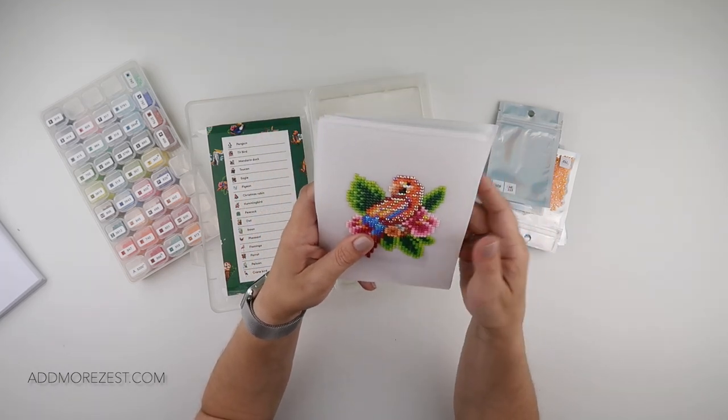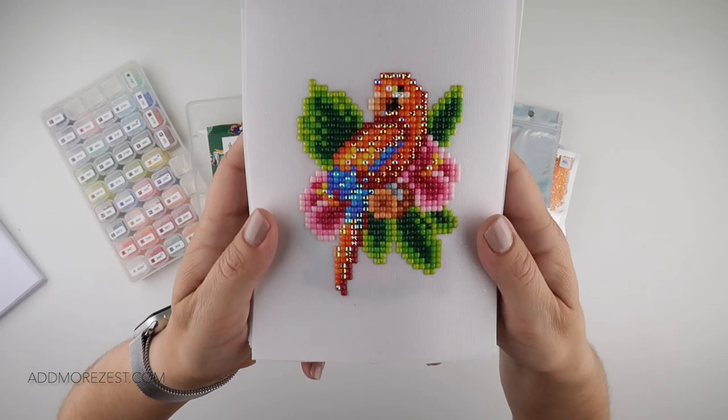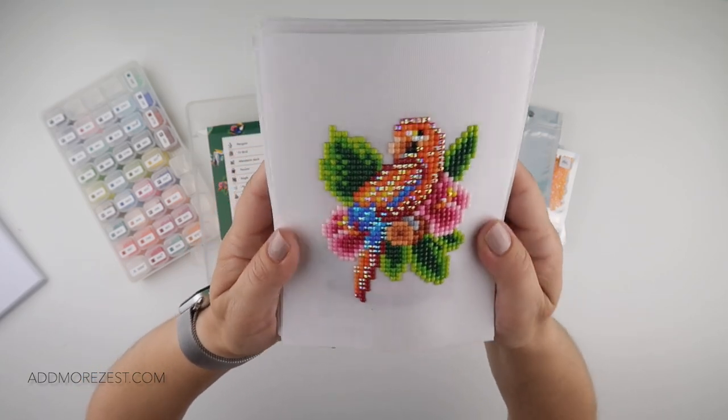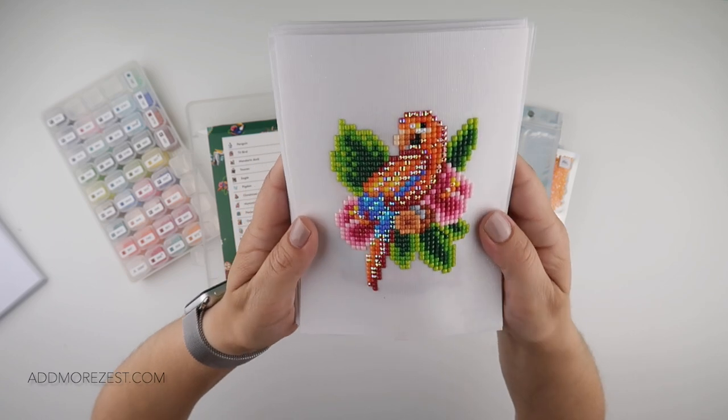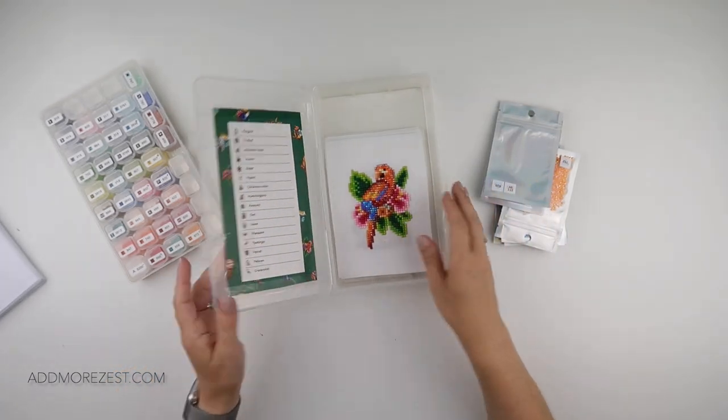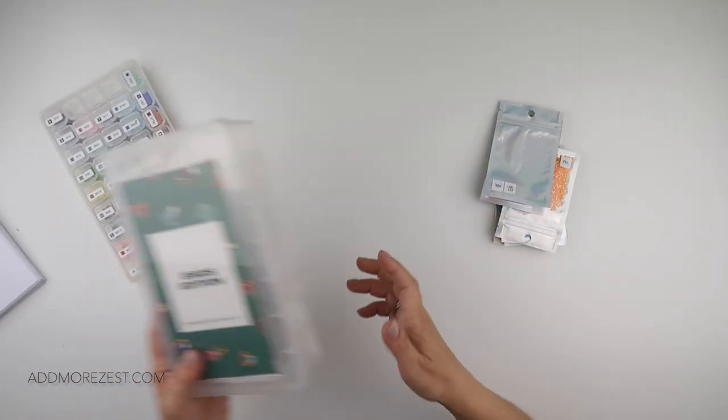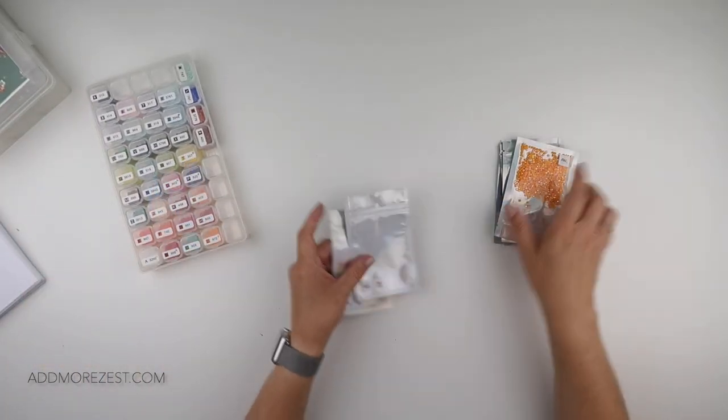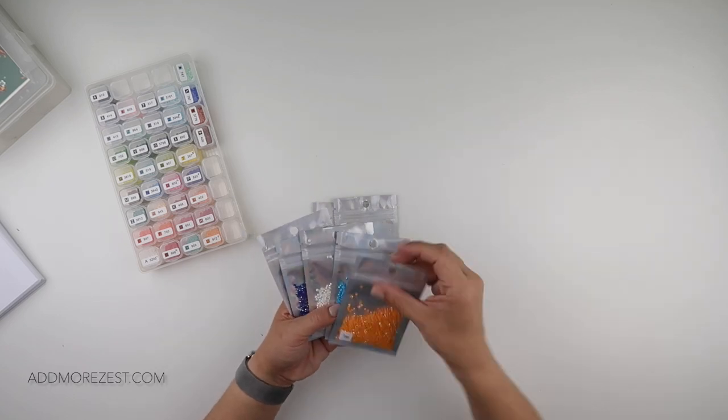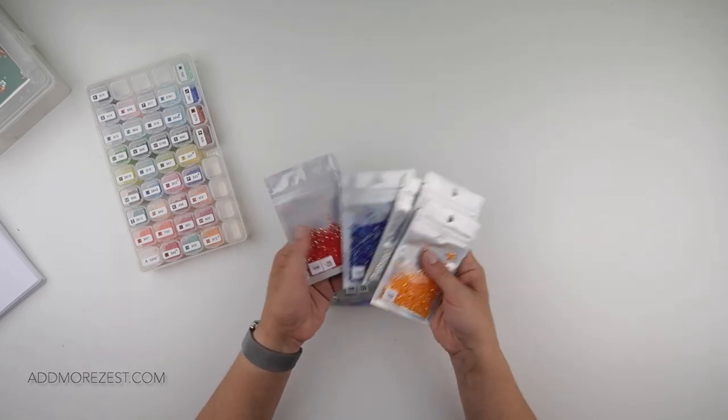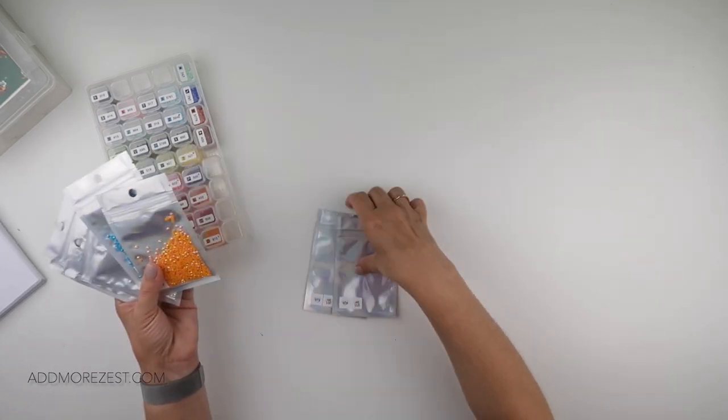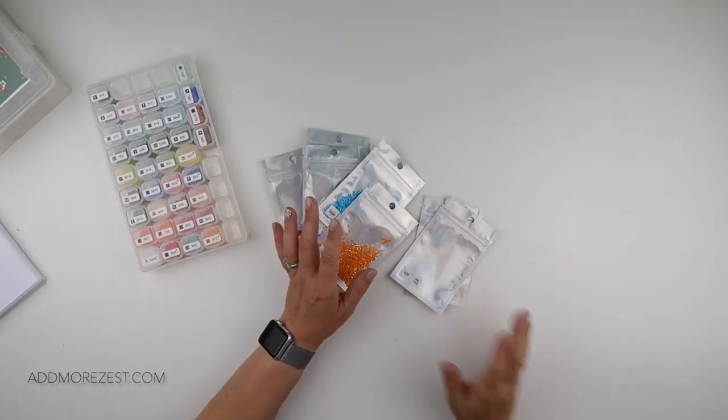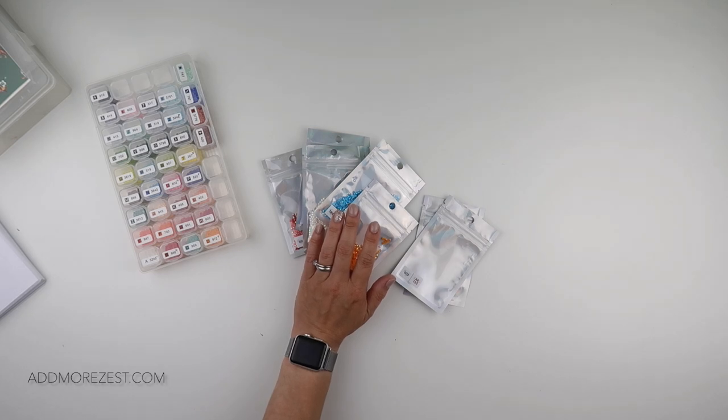I will go through each of these and show you how I've done them as I put them in my display book. But just to show you one, this is a parrot where I have put a few ABs in him just to make him a little bit more sparkly. But once they go in the display book, I'll show you them truer.